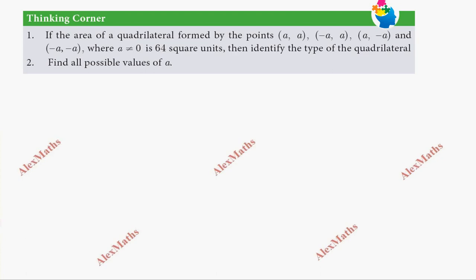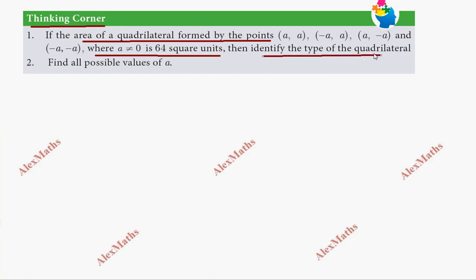Hi students, this is Alex here. In this video we are working on a question: solve for the area of a quadrilateral formed by the points. Given that the area equals 64 square units, identify the type of quadrilateral. The first part is to find all possible values of a.